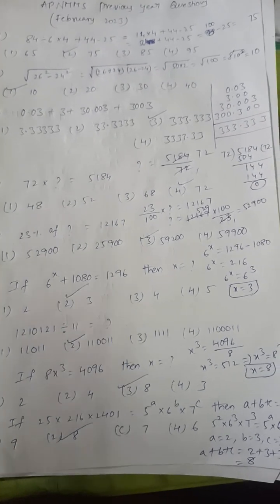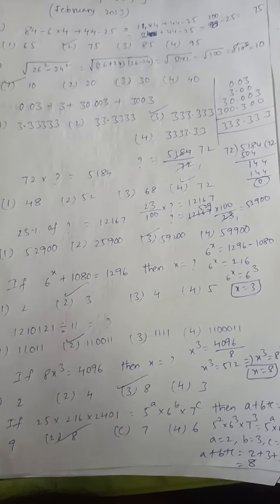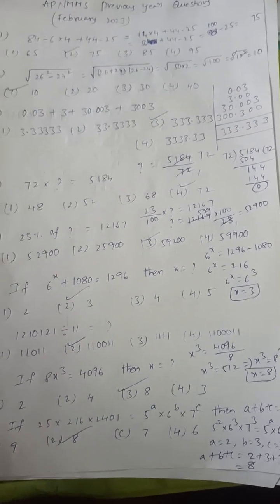Next: if 64x plus 1080 equals 1296, then x equals what? 1080 goes to the right side as minus. 1296 minus 1080 is 216.